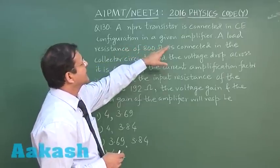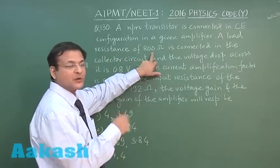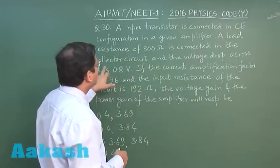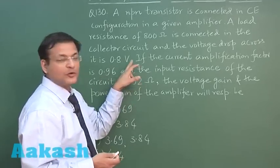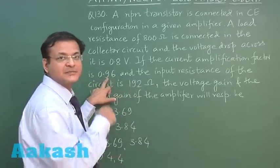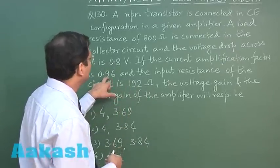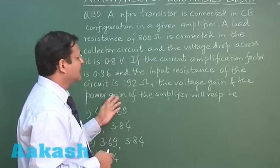A load resistance of 800 ohms, the voltage drop across it is 0.8 volt. The current amplification factor is 0.96, ic upon ib has been given to you, and the input resistance of the circuit is 192 ohms. Find the voltage gain and the power gain.